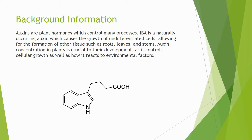Auxins are involved in many forms of tropism. Having a higher concentration of auxins on one side of a plant will cause the cells on that side to grow faster, and therefore the whole plant will curve away from that side. Auxins also help cause the growth of undifferentiated cells, which in turn forms roots, leaves, and stems.